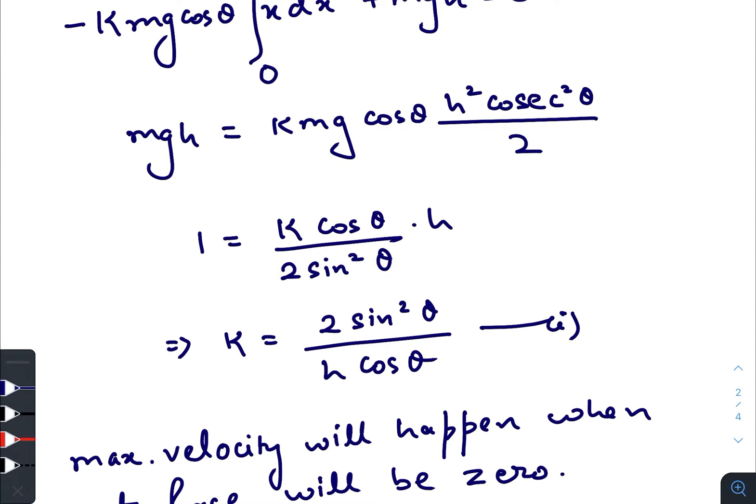So k was an unknown value, unknown constant. Even theta is unknown but it will get cancelled out eventually.